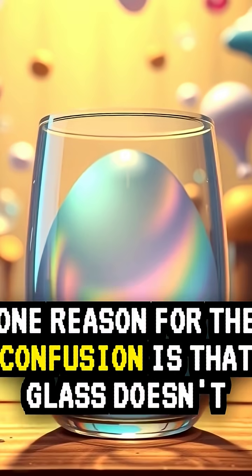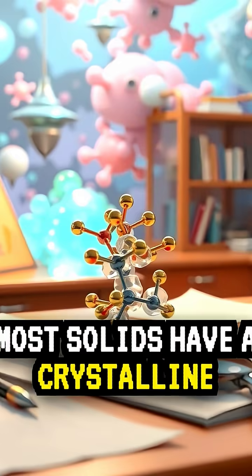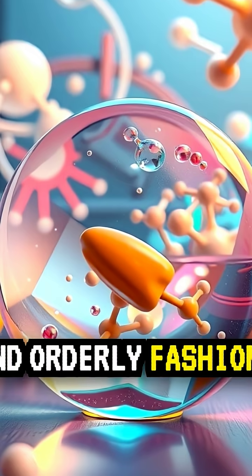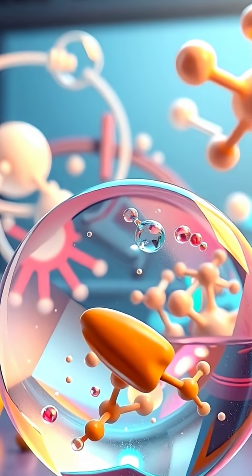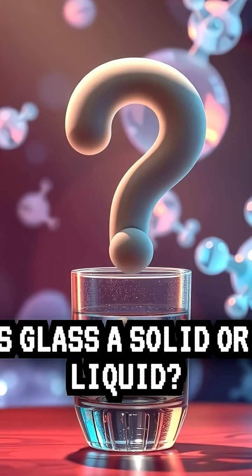One reason for the confusion is that glass doesn't behave like other solids. Most solids have a crystalline structure with their molecules arranged in a neat and orderly fashion. But glass is different. Its molecules are all jumbled up, like a liquid. So is glass a solid or a liquid?